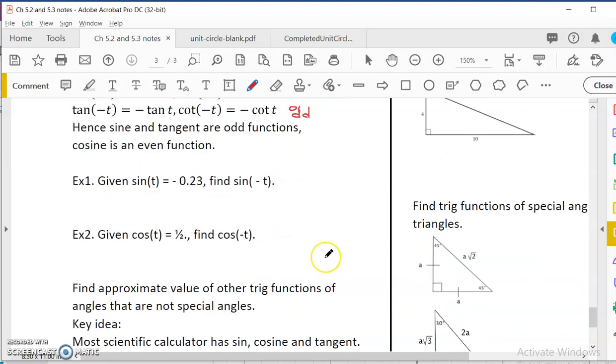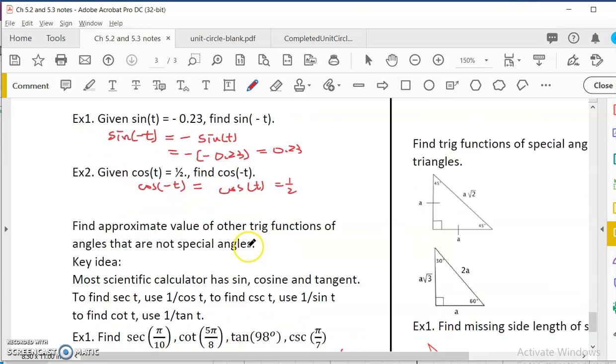So let's use this odd and even identity to find some numbers. If sine t is negative 0.23, what is sine negative t? So we know that sine negative t is equal to negative of sine t, right? But sine t is already a negative number, so it would be negative of a negative 0.23. So that would be 0.23. Cosine t is 1 half. What is cosine negative t? No change, right? Negative t is just equal to cosine t. If it is 1 half, that's 1 half. If it's positive, it's positive. It's negative, it's negative.